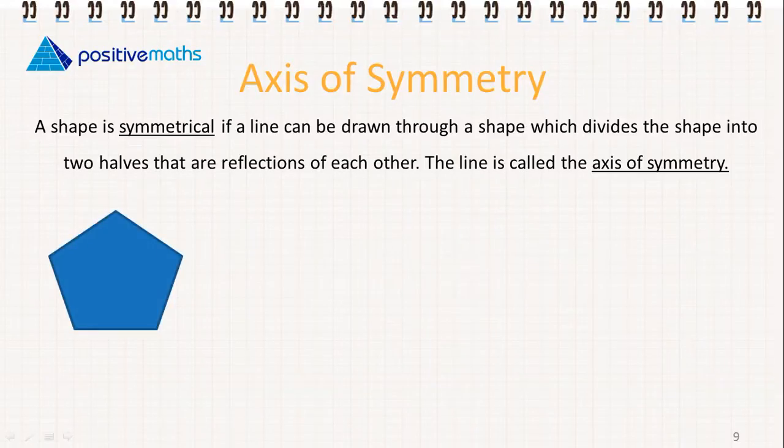So let's look at some shapes. Here, if we draw this dotted line down the middle, we will see that both sides match each other. So if we imagine this was a sheet of paper that we could fold over, if we fold it over, the two halves will lie on top of each other perfectly.